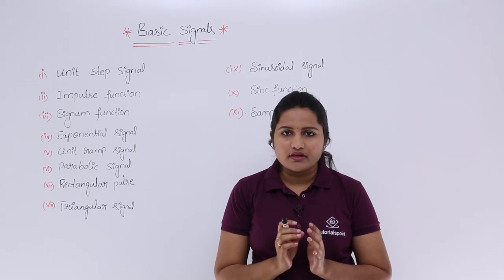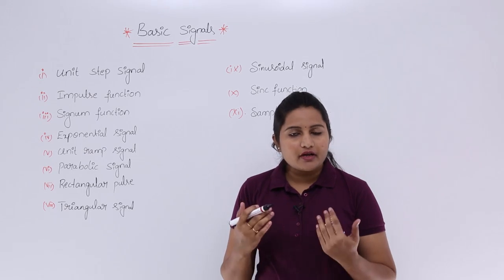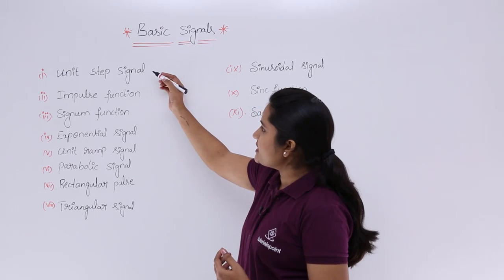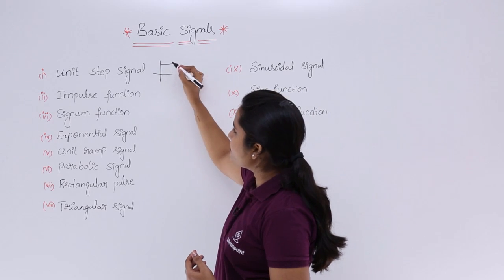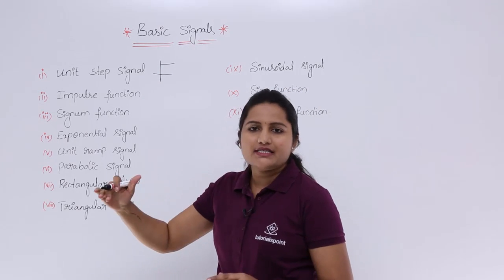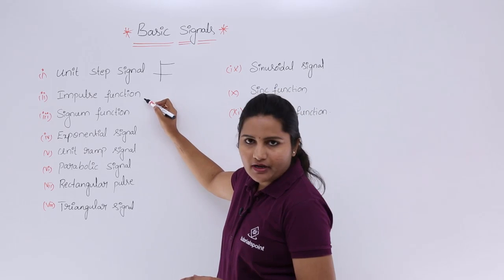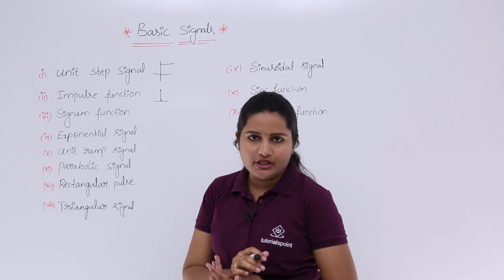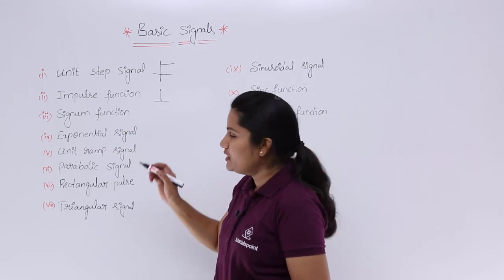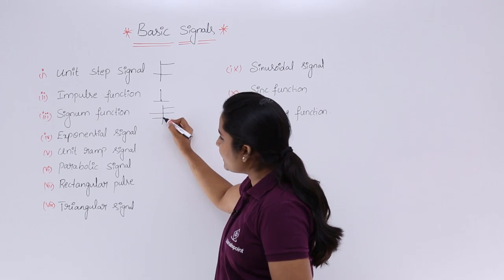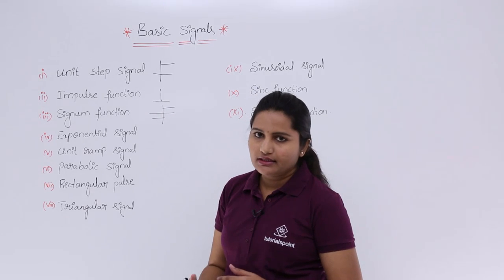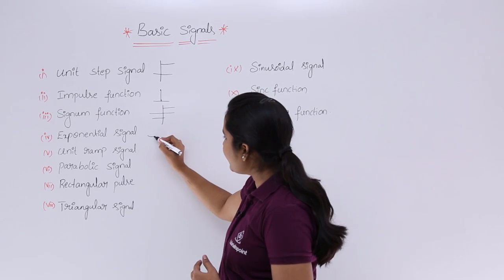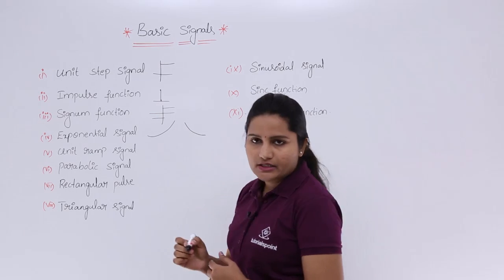I think you are already familiar with the shape of these signals, but from next class onwards we will take the definitions of each and every signal separately. The unit step signal is like a half DC signal, the impulse function is just an impulse — a single sample at t equal to 0. The signum function has its own shape, and the exponential signal may be a rising exponential or a decaying exponential.